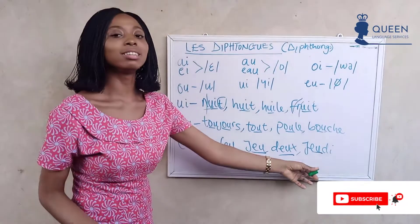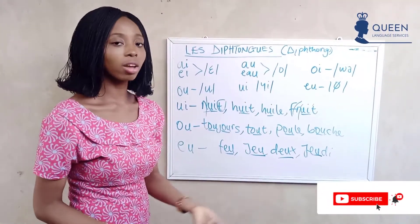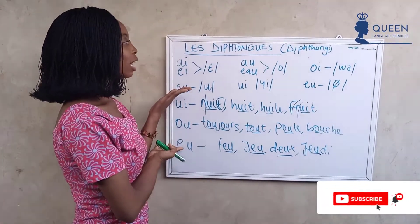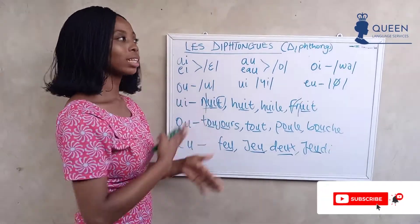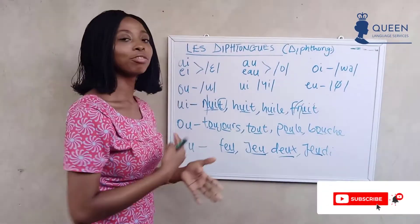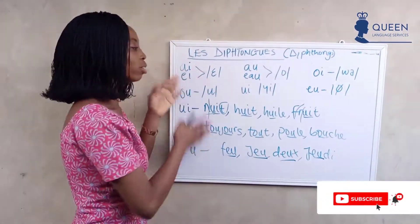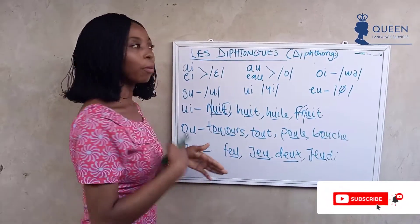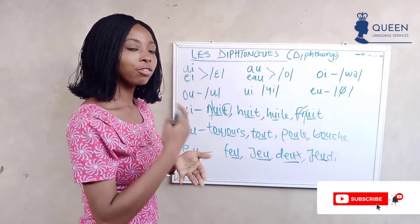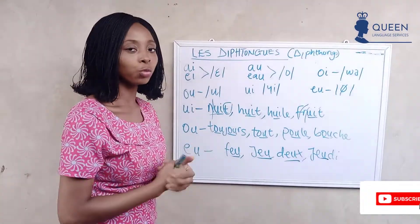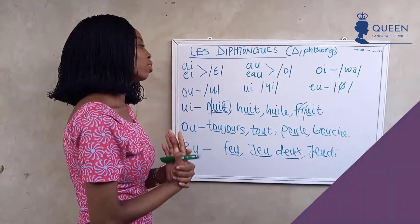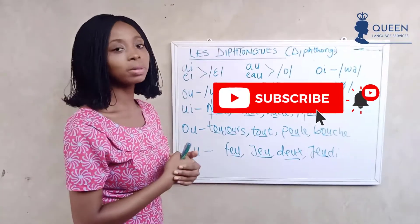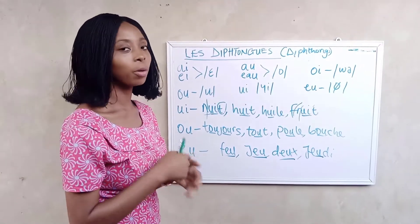We also have 'jeudi', which is Thursday in English — a day of the week. So those are the most prominent diphthongs in French and the sounds they give. I hope you find this video useful. Give it a thumbs up, share with loved ones, and subscribe. See you in the next video, bye for now!